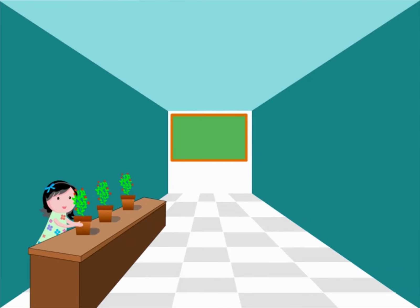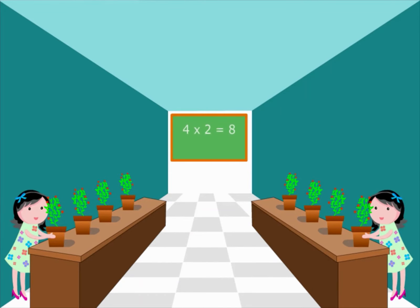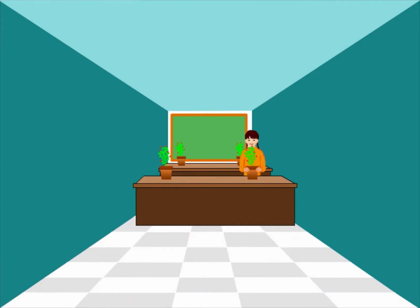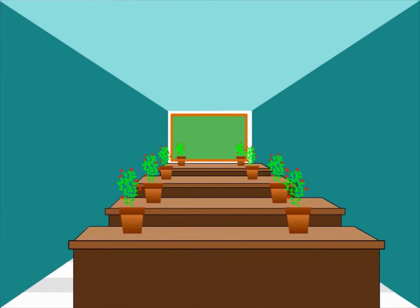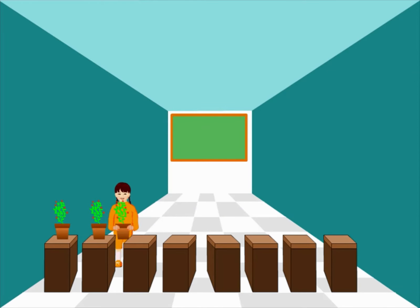Next she arranges four flower pots in each row. So four times two is equal to eight. Next she arranges two flower pots in each row. So two times four is equal to eight. Finally she arranges eight flower pots in a row. So one times eight is equal to eight.